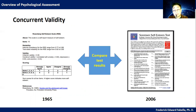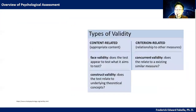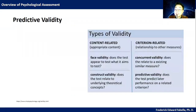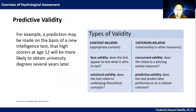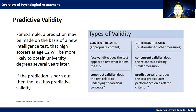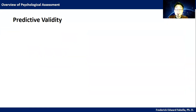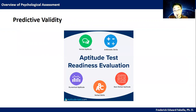Let's now proceed to predictive validity. This is the degree to which a test accurately predicts a criterion that will occur in the future. For example, a prediction may be made on the basis of a new intelligence test that high scores at age 12 will be more likely to obtain university degrees several years later. If the prediction is borne out, then the test has predictive validity. A very common example of that are aptitude tests.